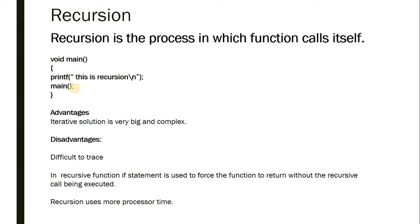What happens here is whenever it calls the main function, it goes back to main again, prints 'this is recursion', calls main again, goes back to main — so it is repetitively calling itself. That means whenever you need iterations, you may go for recursion. However, the program may not come out because every time it is going to call, it will be an infinite loop.